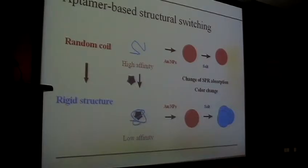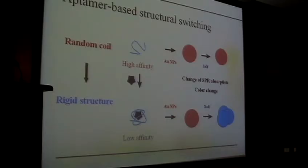The basic idea is like this. A single-stranded DNA aptamer, which is soft, can wrap around the surface of gold nanoparticles, so it is resistant to salt-induced aggregation and the solution is red. If it binds to a target and forms a tertiary structure, it becomes rigid, cannot bind to the gold nanoparticles, and can be aggregated by salt, changing the color to blue.